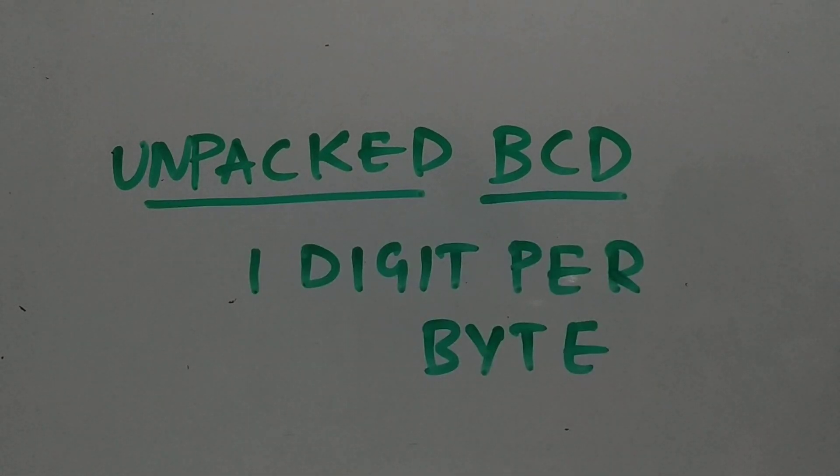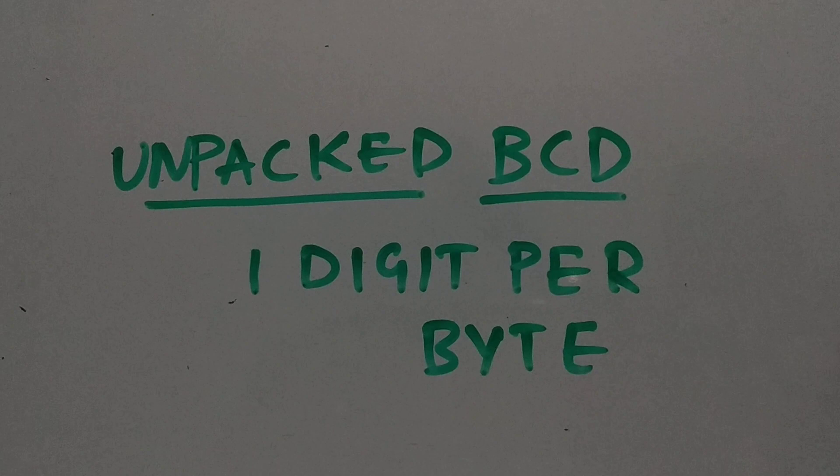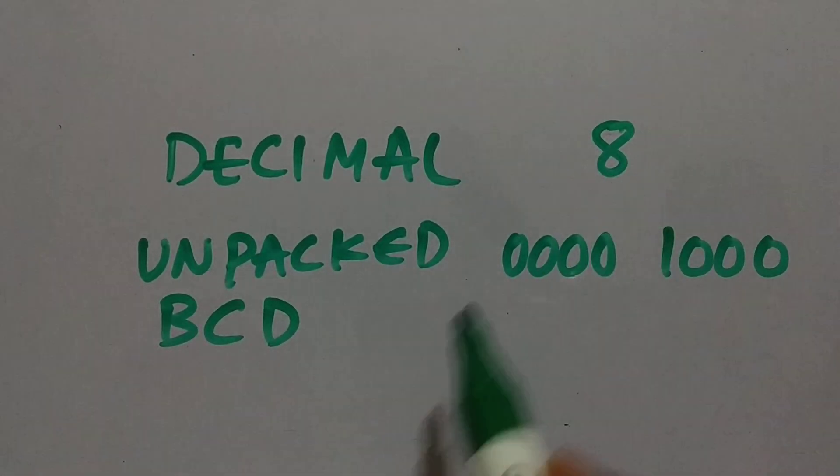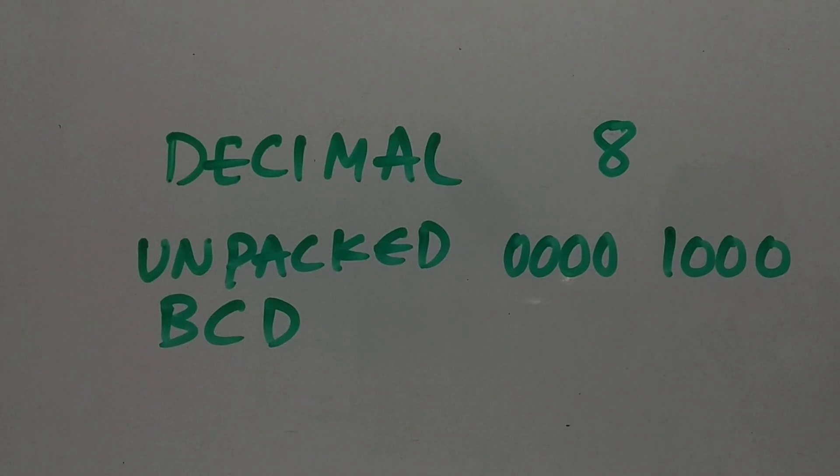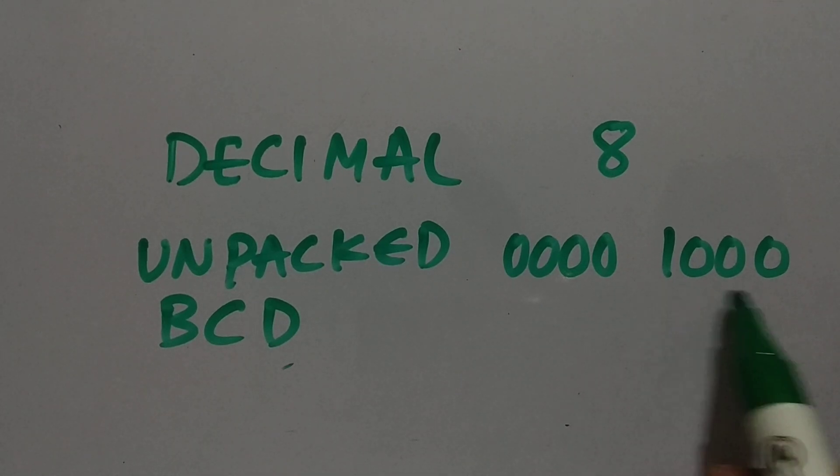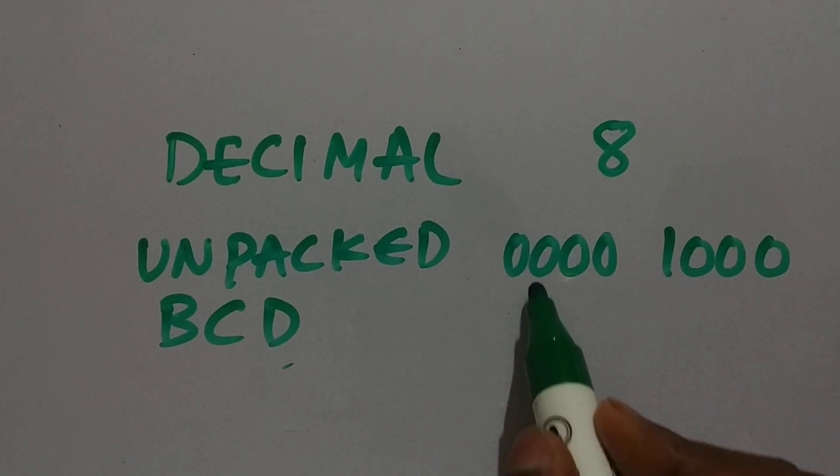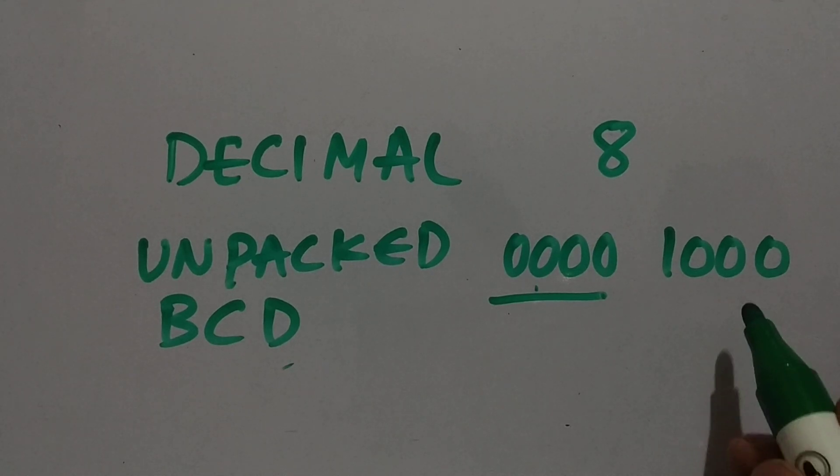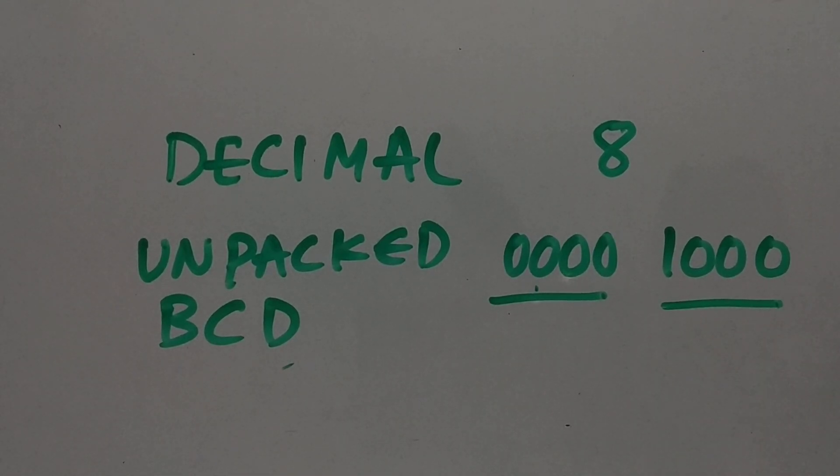Now let us come to packed BCD versus unpacked BCD. In unpacked BCD, we represent one digit per byte, so that's a lot of memory wastage. Let's see an example. If we take decimal 8, it is represented as one byte in unpacked BCD: 0000 1000. Here, 0000 has no significance. Only the lower nibble has the weight and gives the value correctly.